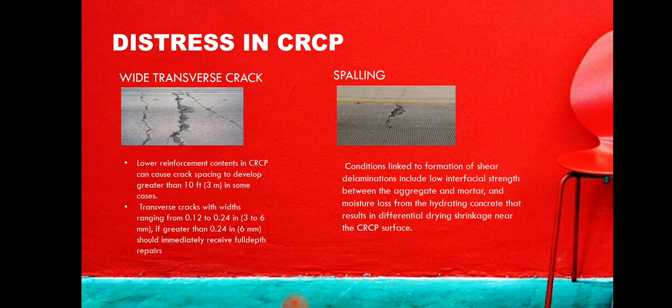Next is spalling. Spalling along the transverse cracks on CRCP is a result of localized fracturing — specifically, localized fracturing of concrete that initiates as a shear delamination parallel to the surface of the CRCP at a shallow depth. Conditions linked to the formation of CRCP delamination include low interfacial bond between the aggregate and mortar, and moisture loss from the hydrating concrete that results in differential drying shrinkage near the CRCP surface.